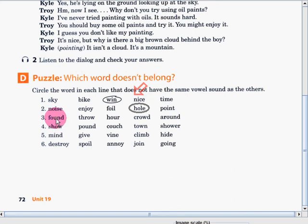Three: found, throw, hour, crowd, around. The word is throw. Throw doesn't have OW sound.